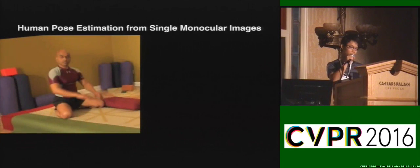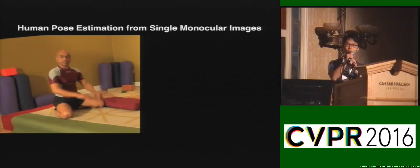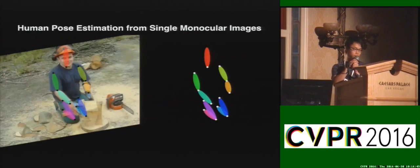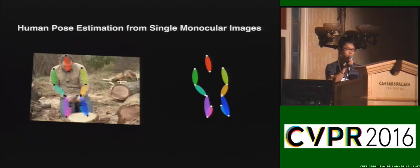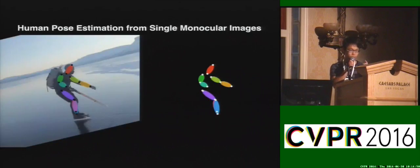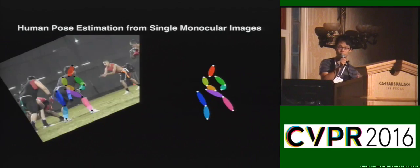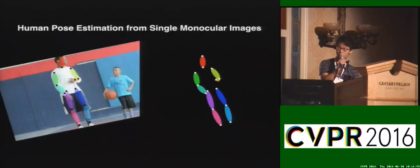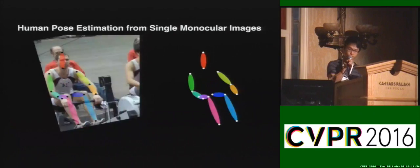I'm presenting the first method. It's a single image, as you can see here — the points and their connections without the image. This handles various angle, poses, and occlusions.